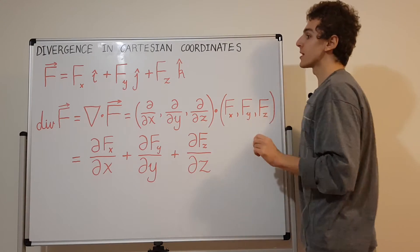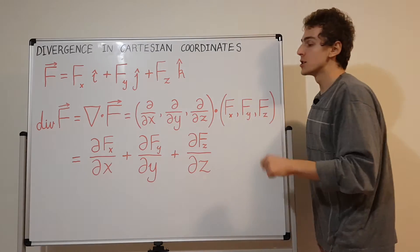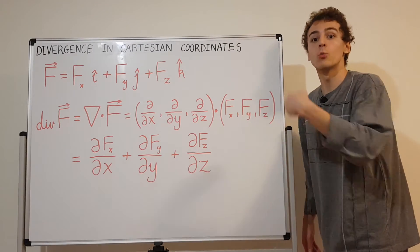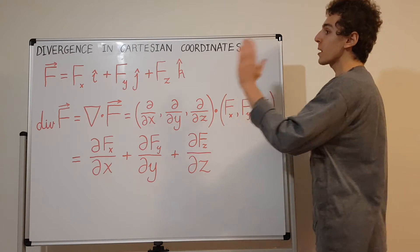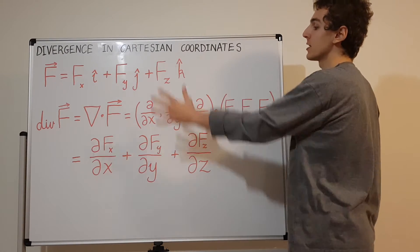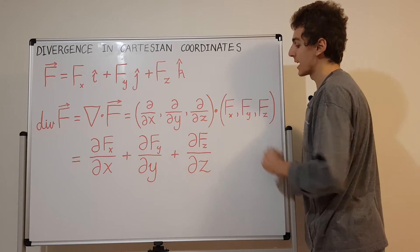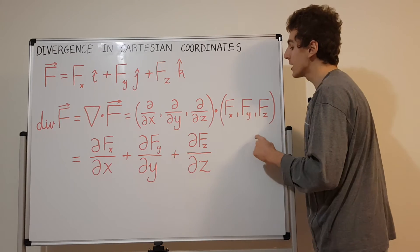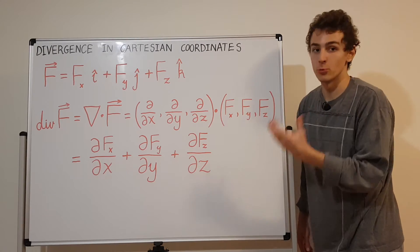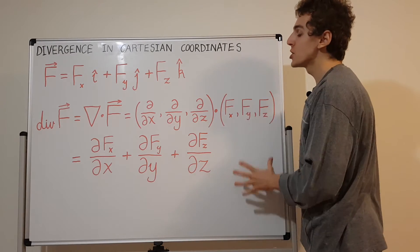Do keep in mind that sometimes people like to use the subscripts of X, Y, and Z to denote partial derivatives with respect to X, Y, and Z respectively. But in this notation over here that I've chosen to use, these guys refer to the components. The subscript X, Y, and Z are the components in the X direction, the Y direction, and the Z direction respectively. That's how this works. This is the definition of divergence.